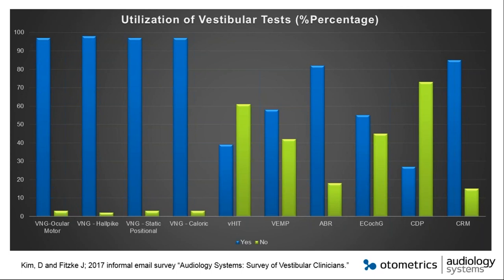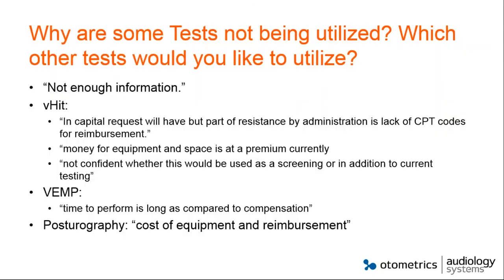Why isn't VHIT or VEMP being used more? In the U.S., there is no designated CPT code for VHIT or VEMP — they use an unlisted code, making it hard to justify equipment purchases in capital requests since administration doesn't see clear-cut reimbursement. The cost of equipment is also a hindrance, and there is a perception that adding these tests to an already long VNG appointment takes too much time.